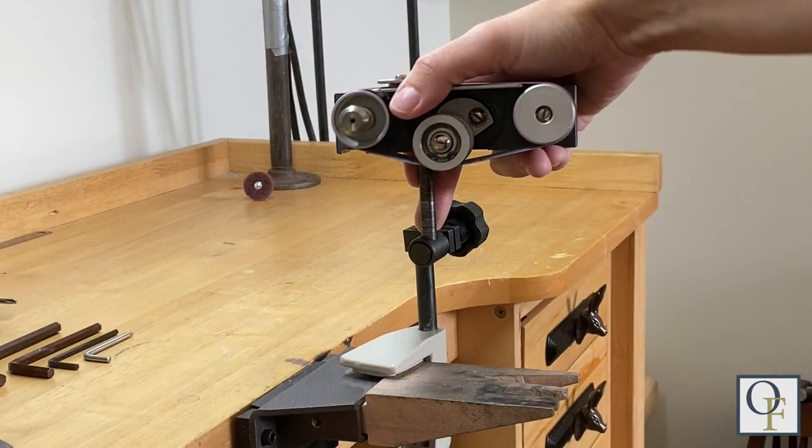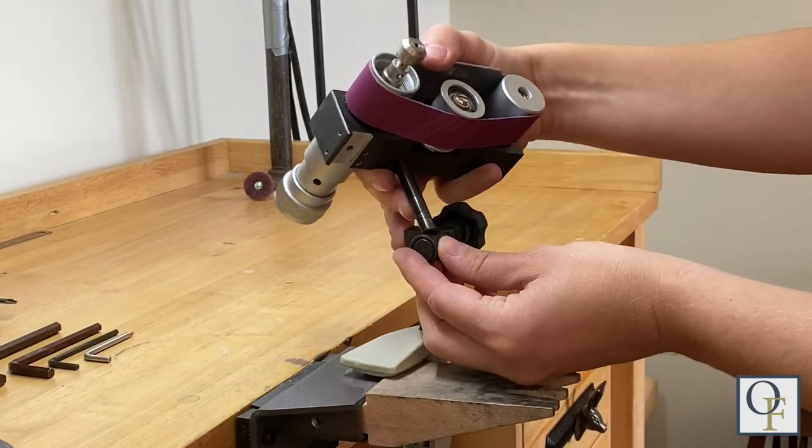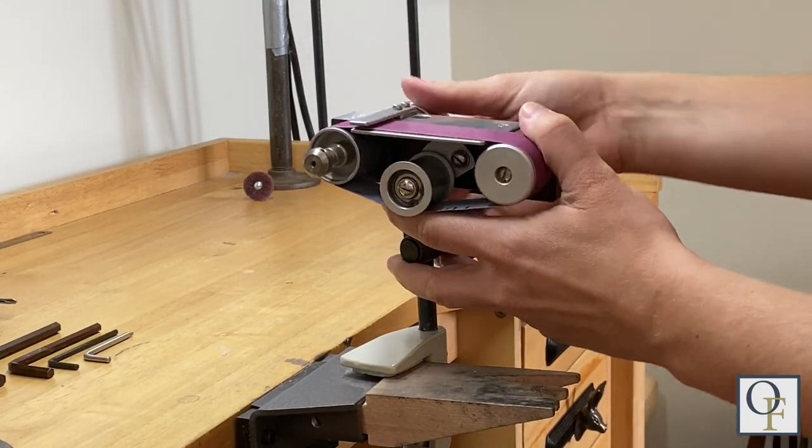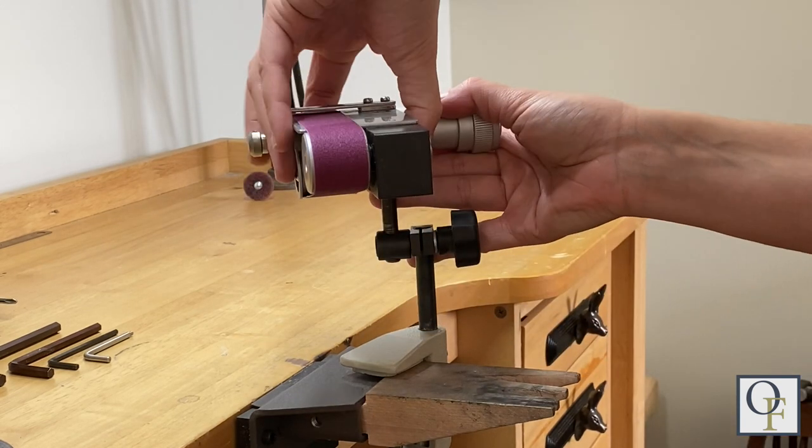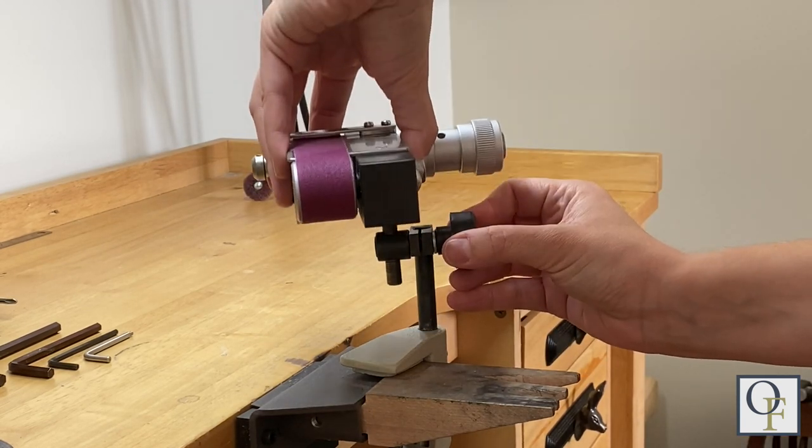Once you have the clamp secured you can attach the sander. You'll notice a hole for the sander to slide onto the clamp and once you get the desired height you can tighten it with the knob on the clamp.